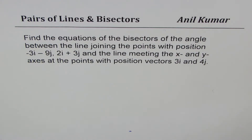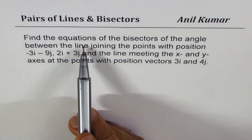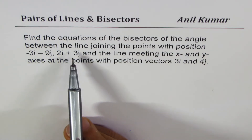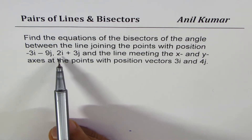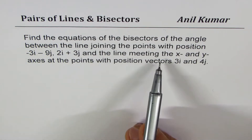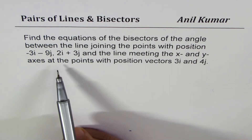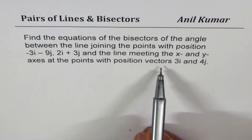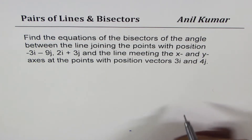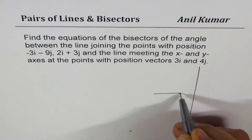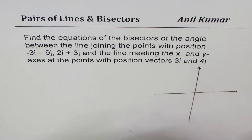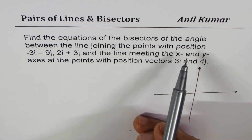I'm Anil Kumar sharing with you the solution of a question from my subscriber. The question is: find the equations of the bisectors of the angle between the line joining the points with position vectors minus 3i minus 9j and 2i plus 3j, and the line meeting the x and y axes at points with position vectors 3i and 4j. For the benefit of all my students, I'd like to translate this question into normal equation of the line form.